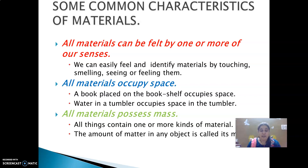The next characteristic is all materials occupy space. A book placed on a wood shelf occupies space in that shelf. Water in a tumbler occupies space in the tumbler. The third characteristic is all materials possess mass. The amount of matter in any object is called its mass. So the three common characteristics of materials are: all materials can be felt by one or more of our senses; all materials occupy space; and all materials possess mass.